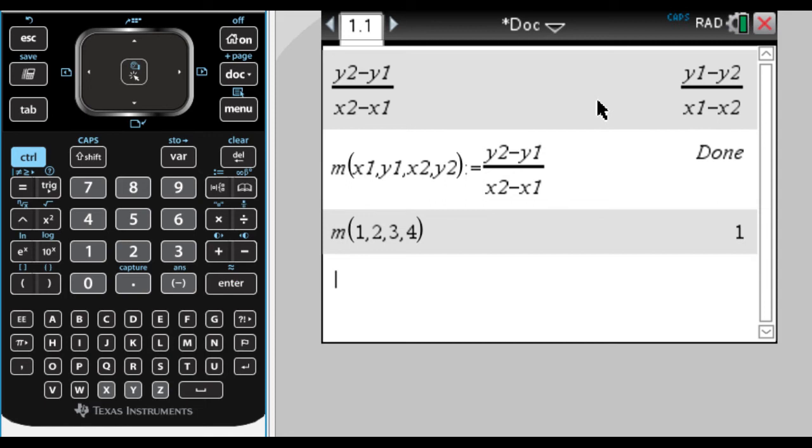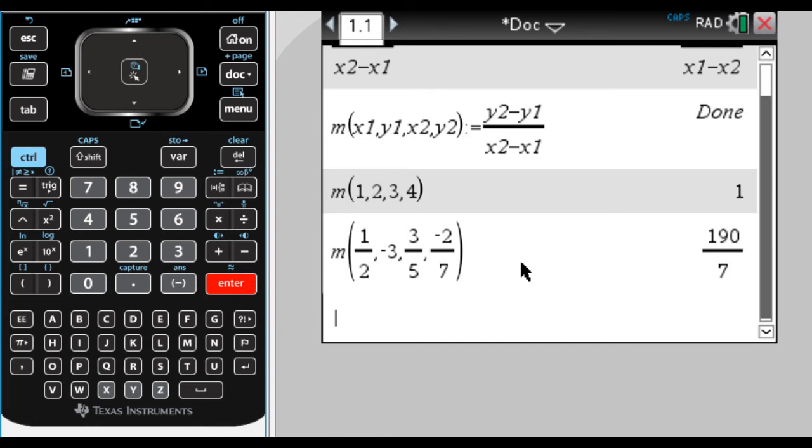But what if the point is a little stranger? So because I have to find a function, it's now in the var key. So m of, so say the point is 1 half, comma, negative 3. And the second point is, let's say, 3 fifths, comma, I don't know, negative 2 sevenths. So I should really use a fraction. You want to get in the habit of using the fraction template as often as possible, so 2 sevenths. So this is going to find the slope of the line between 1 half, negative 3, and 3 fifths, comma, negative 2 sevenths. So we got two points. Both of them are kind of ugly. When I press enter, though, the calculator doesn't care. It works it out for us. It gets 190 over 7. So that's a pretty nice function that we can define.